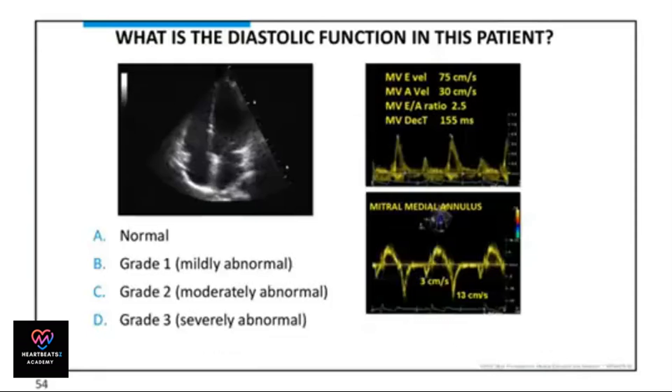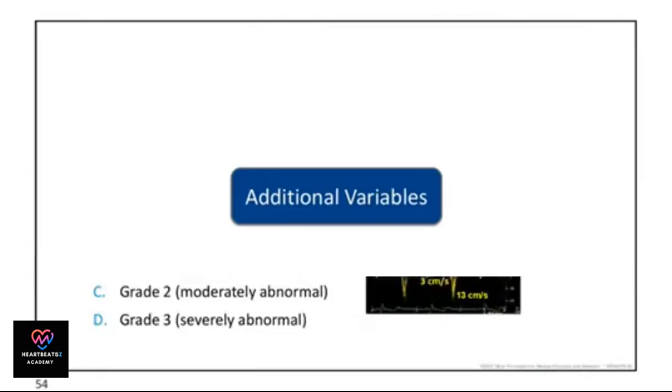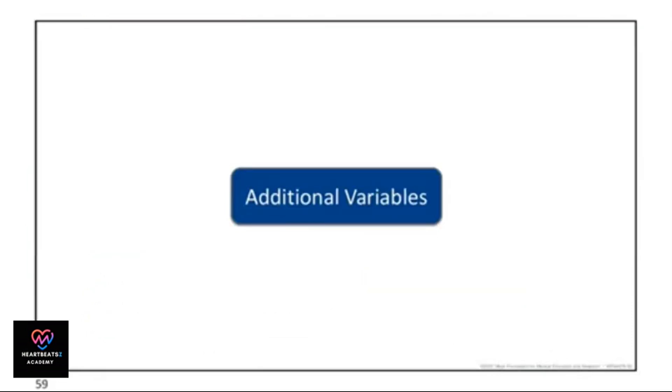Assessing diastolic function in patients ranges from normal to grade 3. Additional variables can influence the assessment of diastolic function.